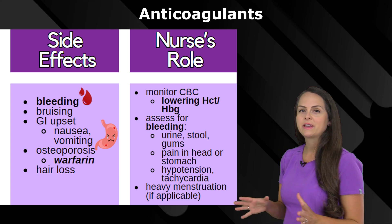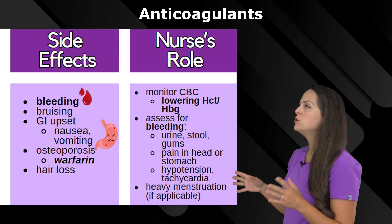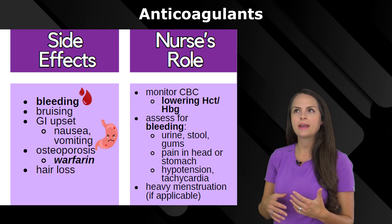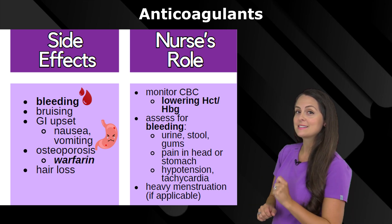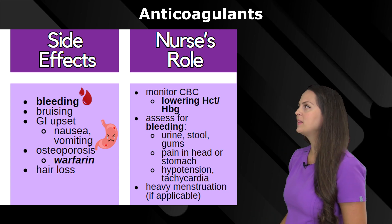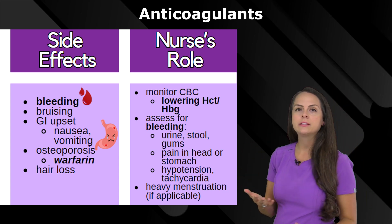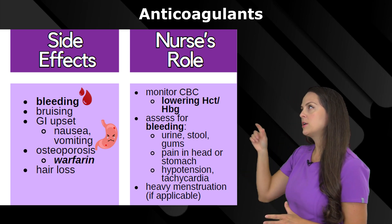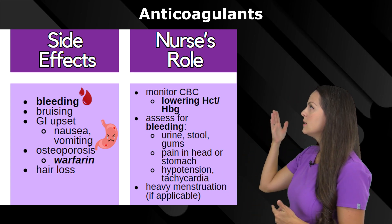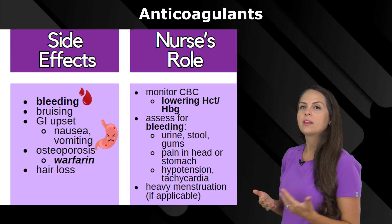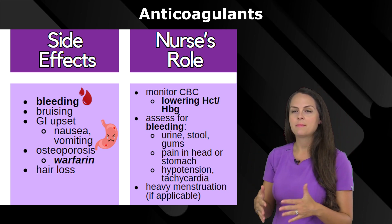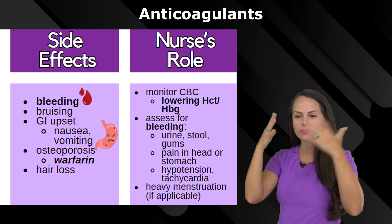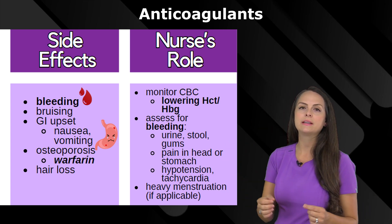The nurse's big role is monitoring for bleeding. You want to monitor the complete blood count ordered by the healthcare provider, specifically looking at hemoglobin and hematocrit. If those levels are trending downward over time, that tells you the patient may have some internal bleeding even if there's no visible outward bleeding.